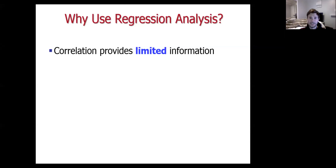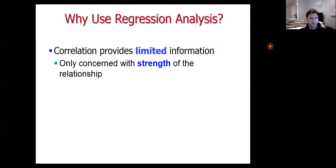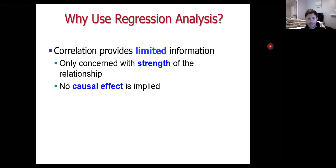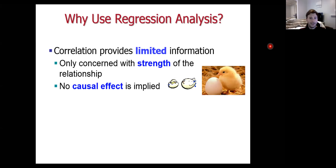Correlation itself is nice — it can quantify the degree to which we have positive and negative relationships, but it's really only concerned with the strength of the relationship. You may have heard this before, but correlation is not the same as causality. There is no causal effect implied, meaning that just because you have a positive relationship between X and Y, we can't say that X causes Y or that Y causes X. We have a proverbial chicken and egg problem here.